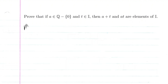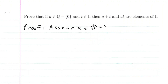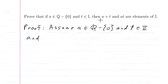We're going to do this by contradiction. So, proof: we're going to assume that A is a rational number, not zero, and we're going to assume T is an irrational number. And for the contradiction part, we're going to assume that A plus T is a rational number.